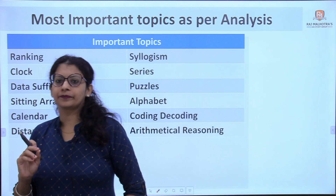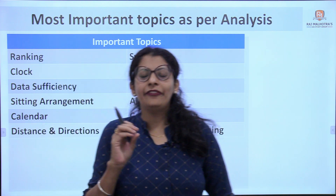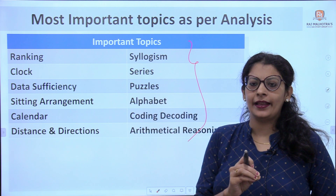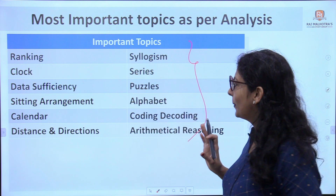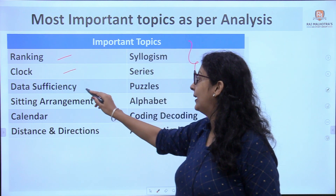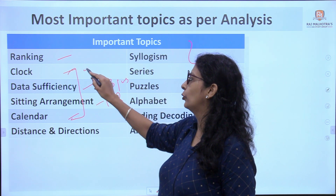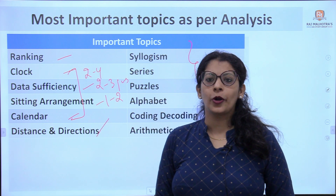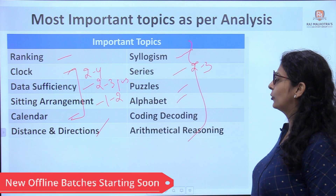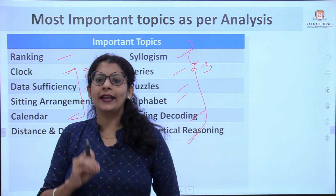Based on the last two years, these are the most important topics and expected question counts: Ranking — 1 to 2 questions; Clock — 1 to 2; Data Sufficiency — 2 to 3; Sitting Arrangement — 1 to 2; Calendar and Clock — 2 to 4; Distance and Direction — 1 to 2; Syllogism — 2 to 3; Series — 2 to 3; Puzzle — 1 to 2; Alphabet — 1 to 2; Coding Decoding — 1 to 2; Arithmetical Reasoning — 1 to 2. These are the important topics for 2023.